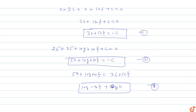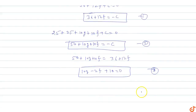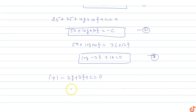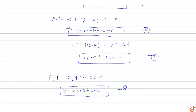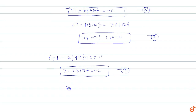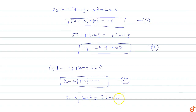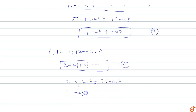Point C with coordinates (-1,1) also lies on the circle. Substituting: 1 + 1 - 2g + 2f + c = 0, giving 2 - 2g + 2f + c = 0, so -2g + 2f = -c. Since -c = 36 + 12f from equation one, we get -2g + 2f = 36 + 12f. This becomes equation five.